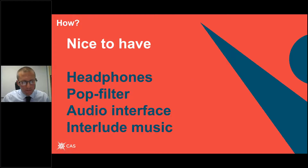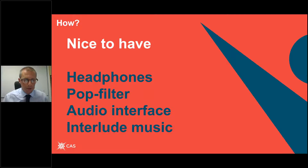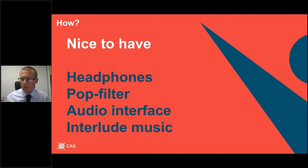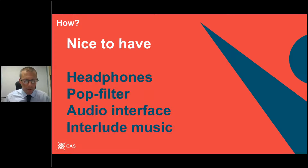Nice-to-haves would be a pair of headphones so you aren't distracted by other sounds and so you can hear voices straight into your ears without mic bleed between mics if you've got more than one. A pop filter or pop shield will protect from plosives and sibilants and can smooth out the sound before you even need to do any editing. An audio interface goes in between your computer and microphone, where you can add presets — for example, if you want a bit of extra bass, you can turn that up. And some interlude music to break up segments.